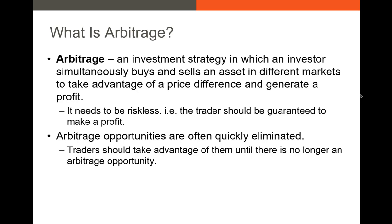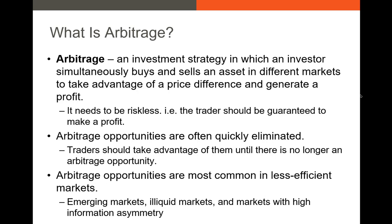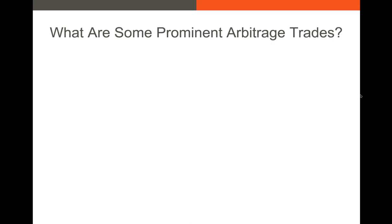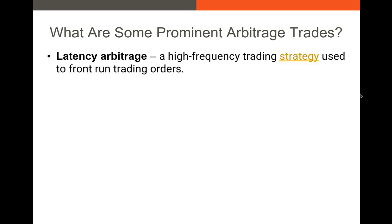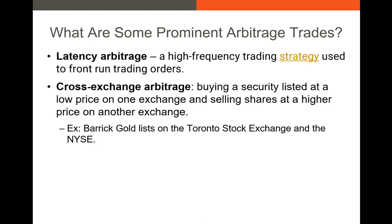Arbitrage opportunities are more common in less efficient markets — for example, emerging markets or markets with very high information asymmetry like bond markets. Two prominent arbitrage types: first, latency arbitrage, where a high frequency trader receives new information and is the first to trade on it. The faster you get your order in, the more profitable that trade should be.